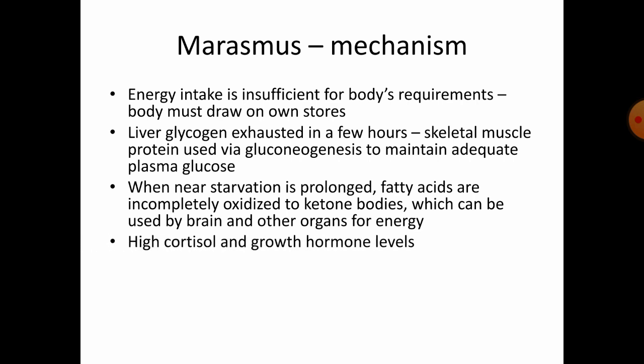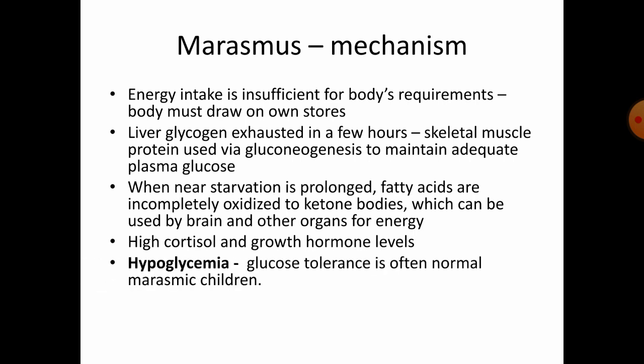In Marasmus, you can see high cortisol and growth hormone levels, hypoglycemia, and glucose tolerance is often normal in Marasmic children. This mechanism is similar to that seen in anorexia — an eating disorder where the patient loses the desire to eat, resulting in muscle mass loss, fat loss, and the patient becoming very thin.